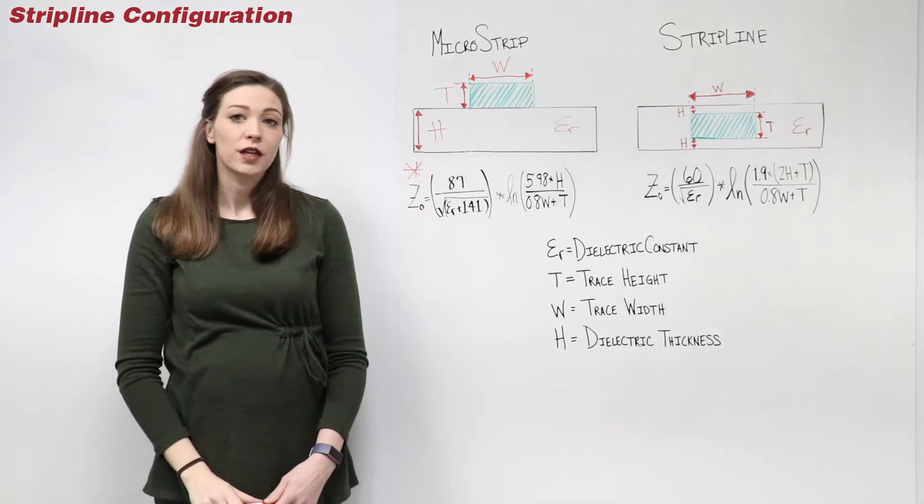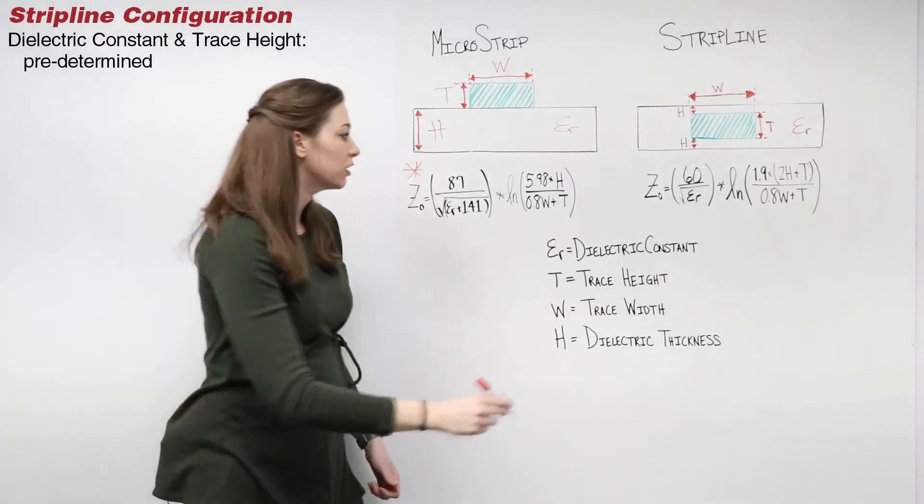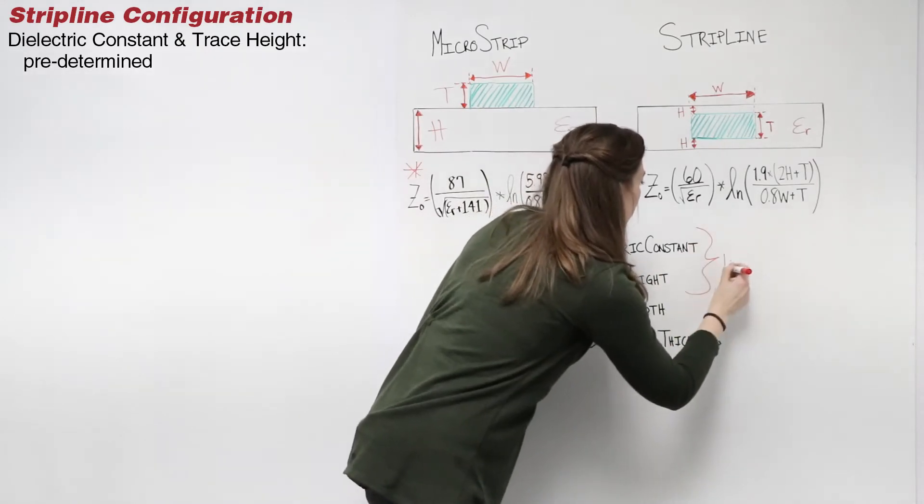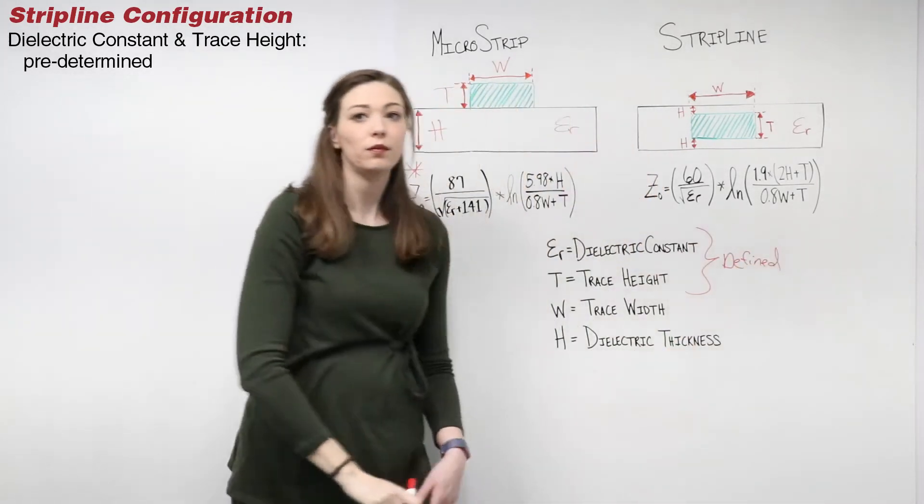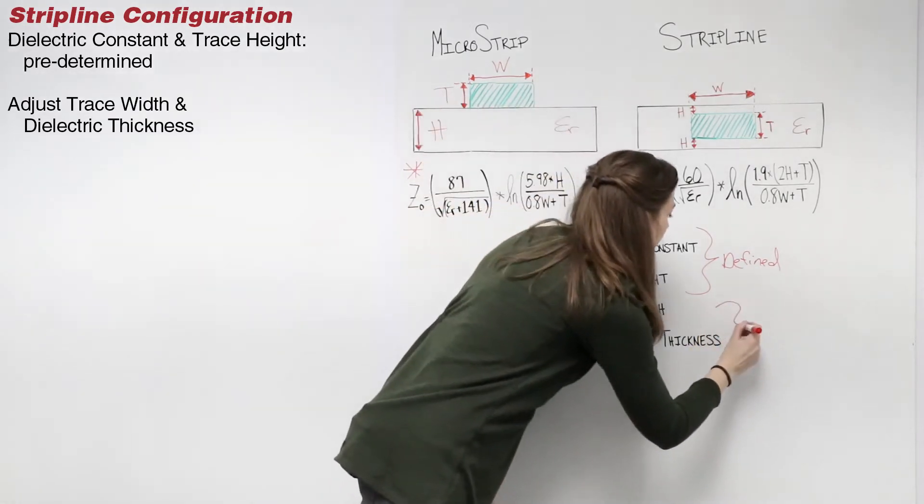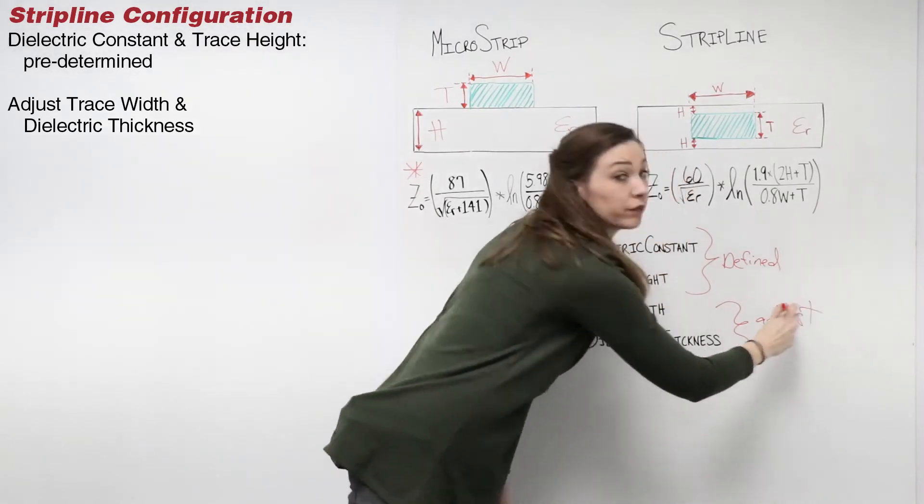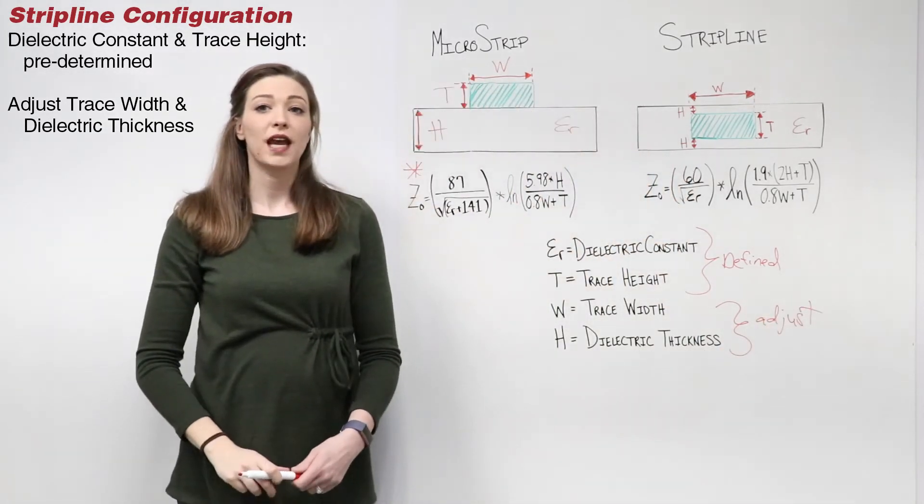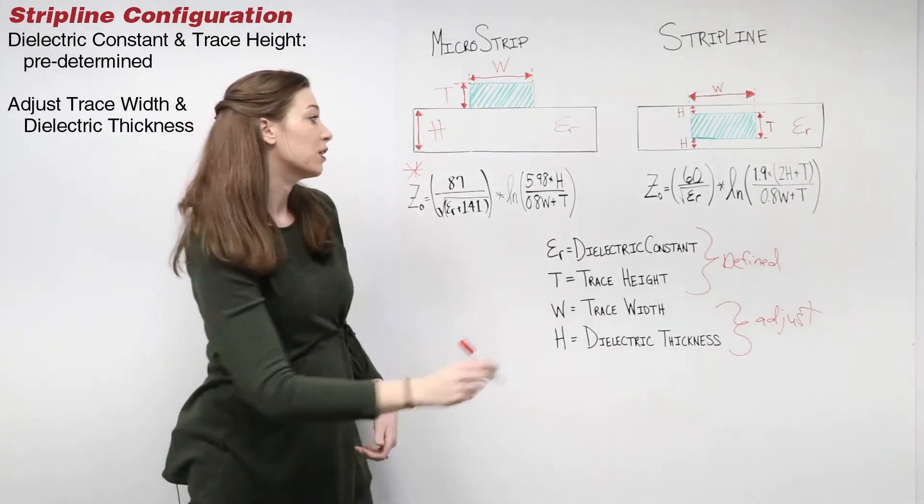Just like the microstrip, the dielectric constant and trace height are predetermined. Adjust the trace width and dielectric thickness to obtain the correct impedance by using the following stripline impedance formula.